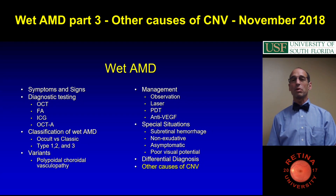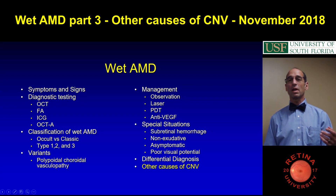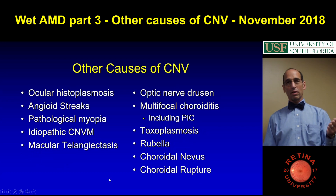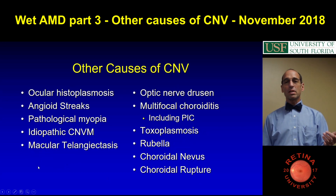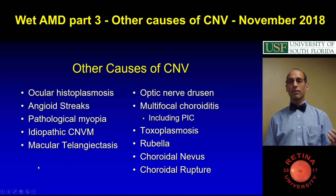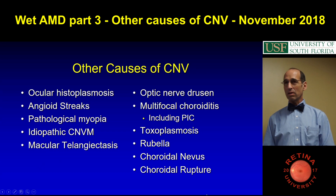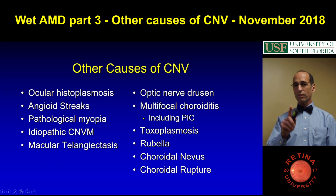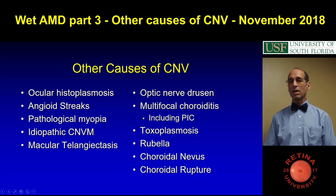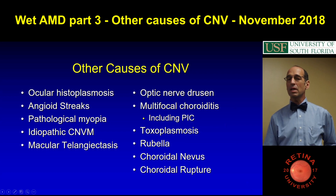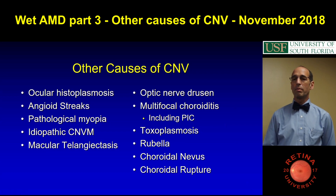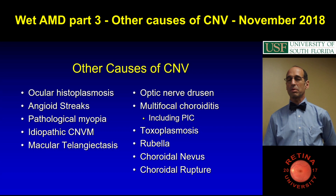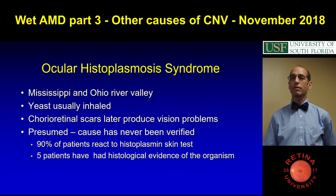So, other causes of wet AMD — we'll go over them. This is the bottom of the wet AMD talk, part three. Oculohistoplasmosis, angioid streaks, myopia, idiopathic, and then I added macular telangiectasia because that's the one I see most often. The first four are the ones from the textbook, and then there's all the stuff on the right, which I have seen except for rubella and toxoplasmosis. So you will see other causes, but mostly it's the five on the left.